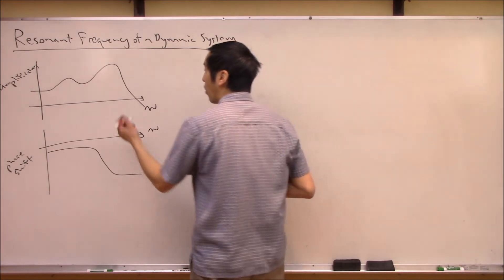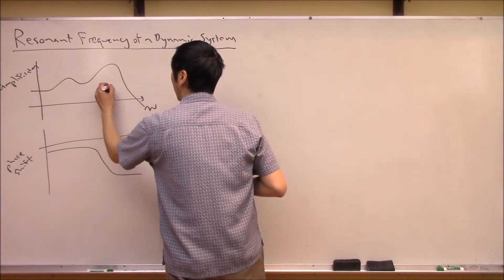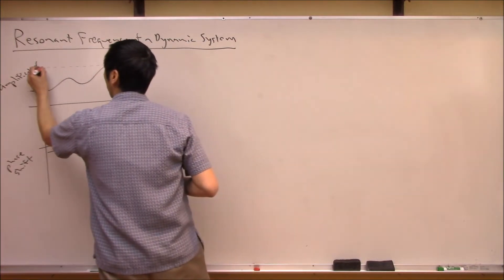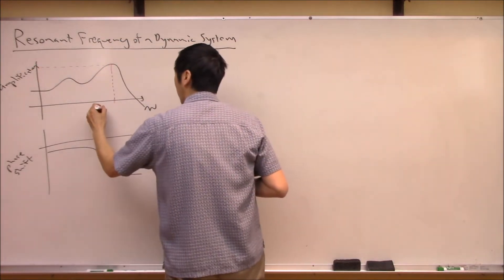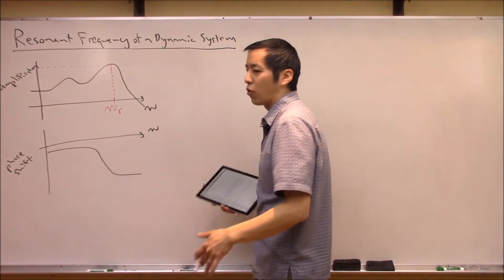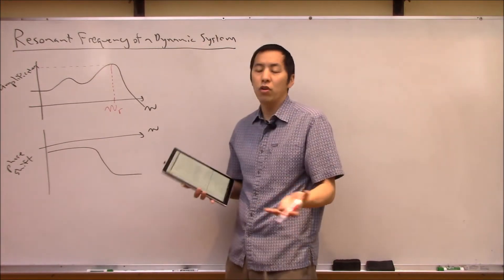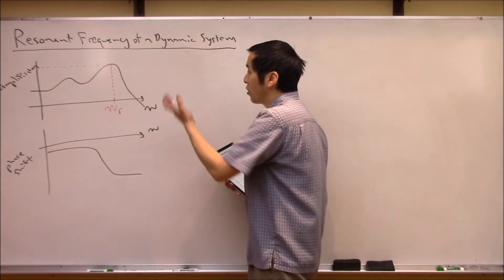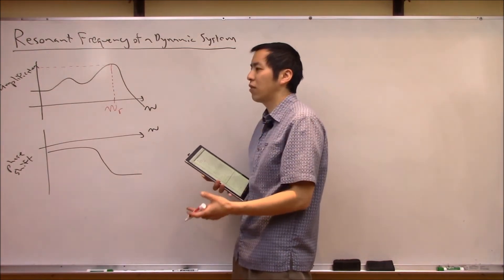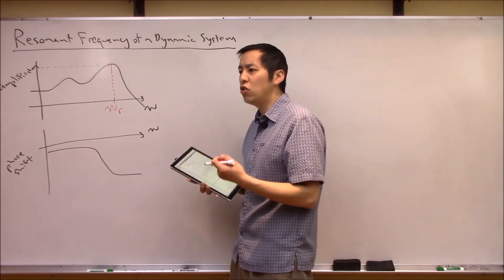This is known as Ω_R, or your resonance frequency. The Bode plot is a great way to visualize that because you can graphically see — resonance is just talking about what frequency you need to drive the system at to get the largest outputs.